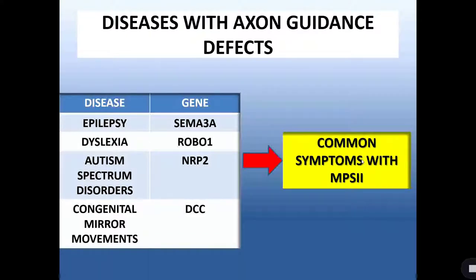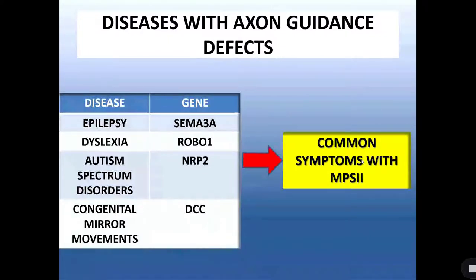Defects in these axon guidance molecules have been associated with many diseases including epilepsy, dyslexia, and autism, which exhibit many common symptoms with those detected in mucopolysaccharidosis type 2.